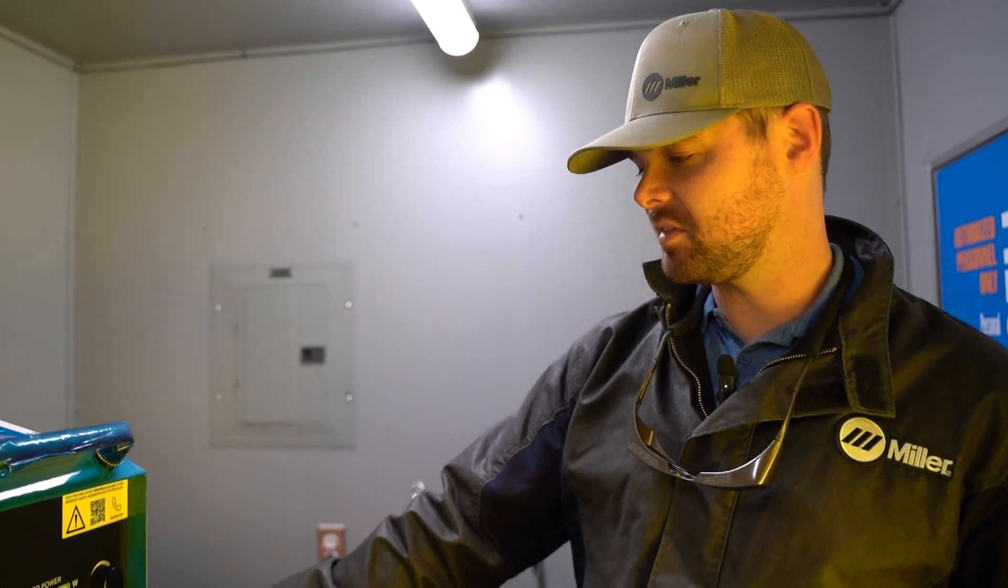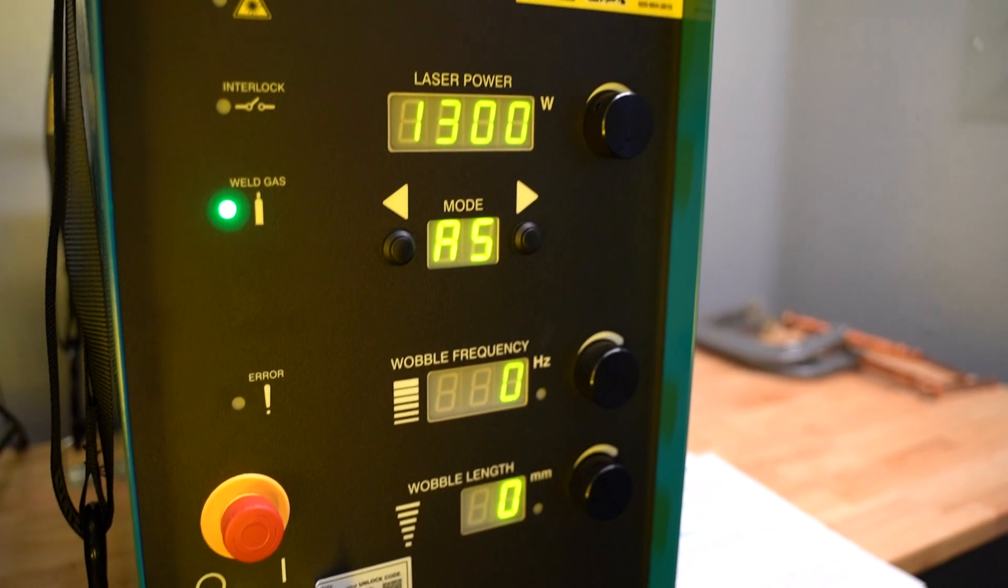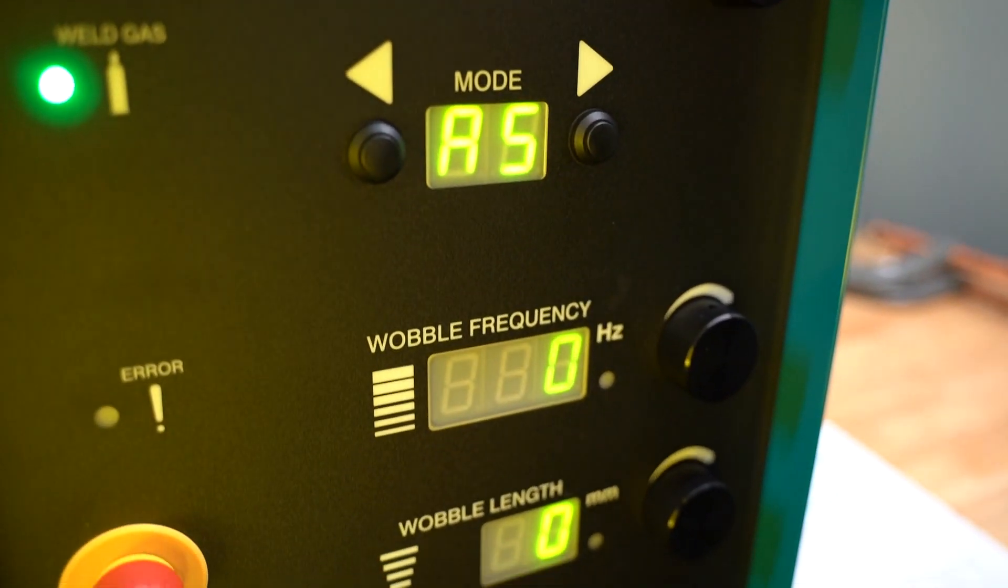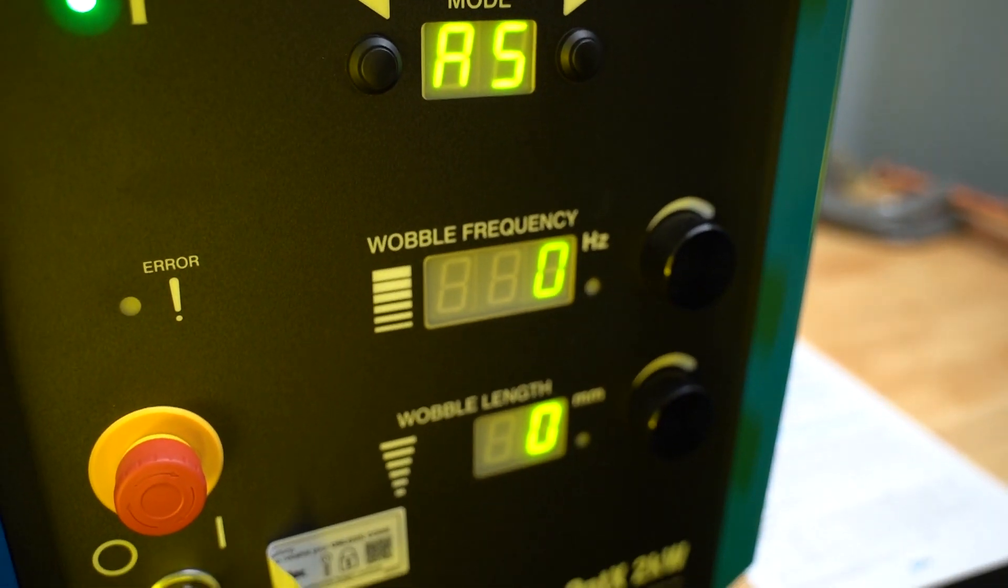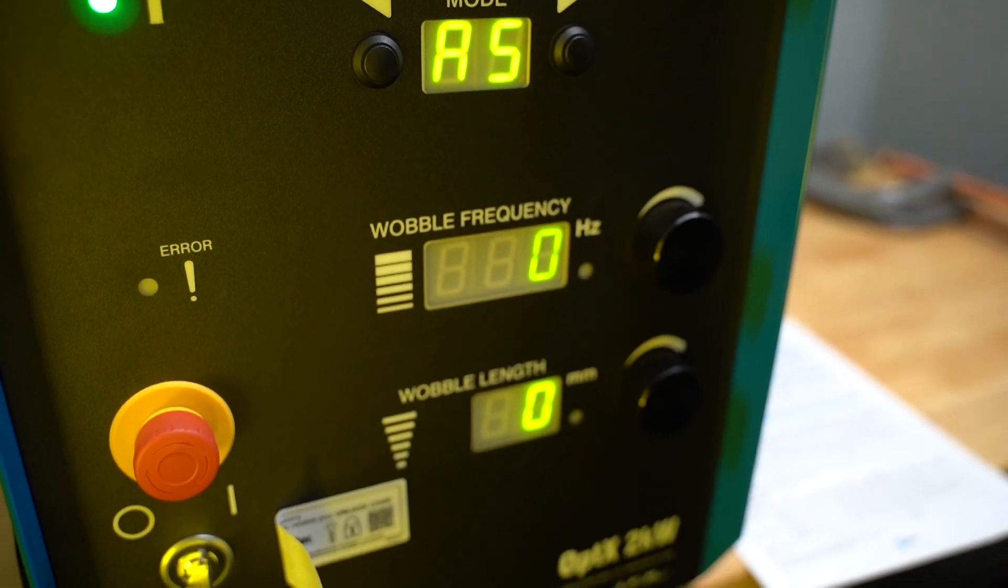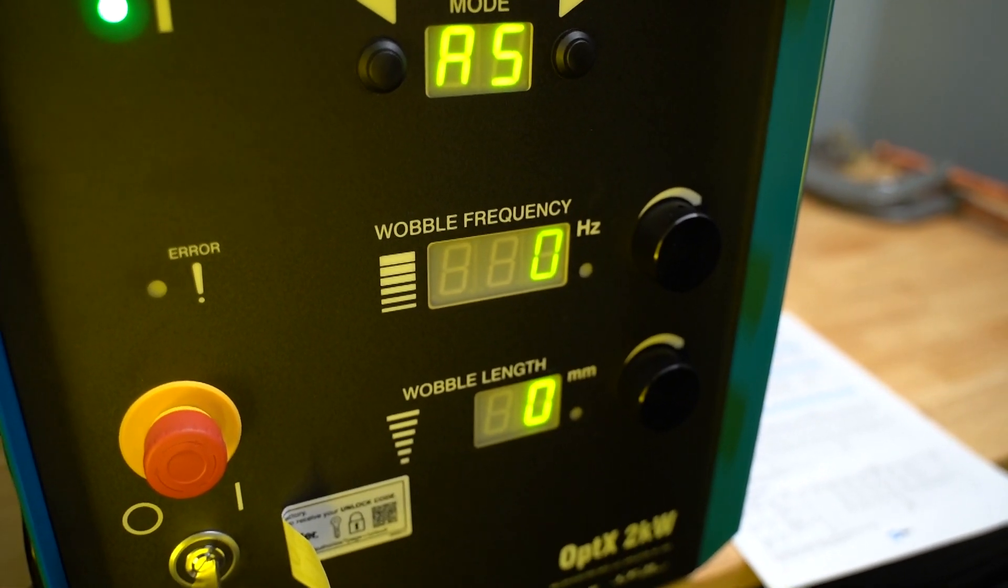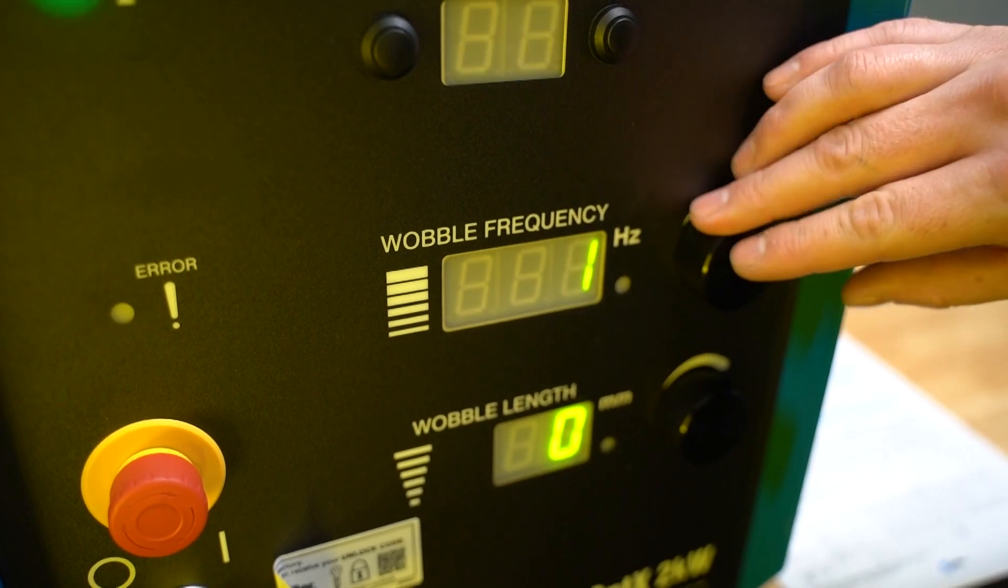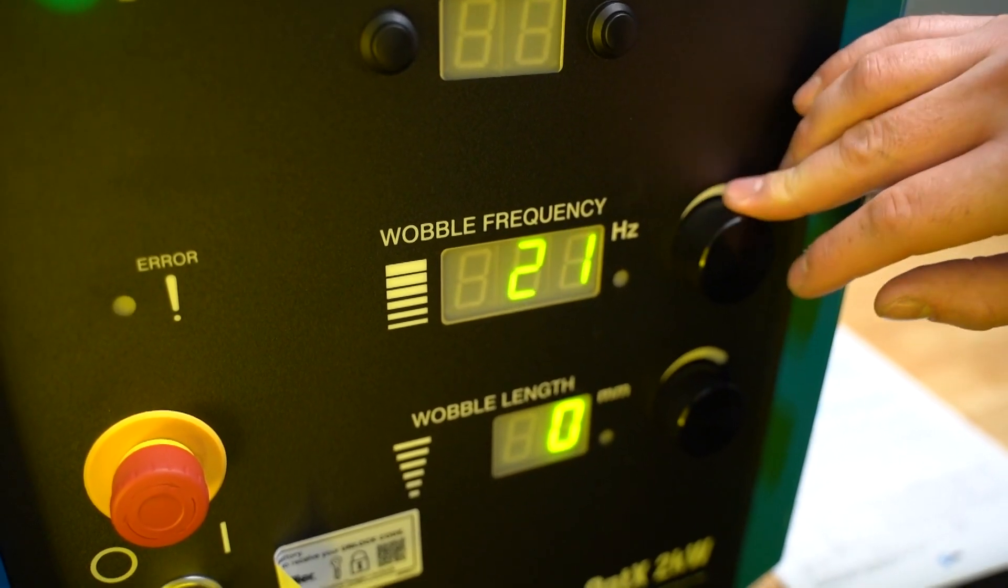Here we have wobble frequency. That is how fast that laser oscillates. The laser itself is a small focal spot—the spot is smaller than the diameter of your wire. There's a little galvo mirror inside your torch that oscillates back and forth left and right. The frequency is how fast that's going to oscillate.